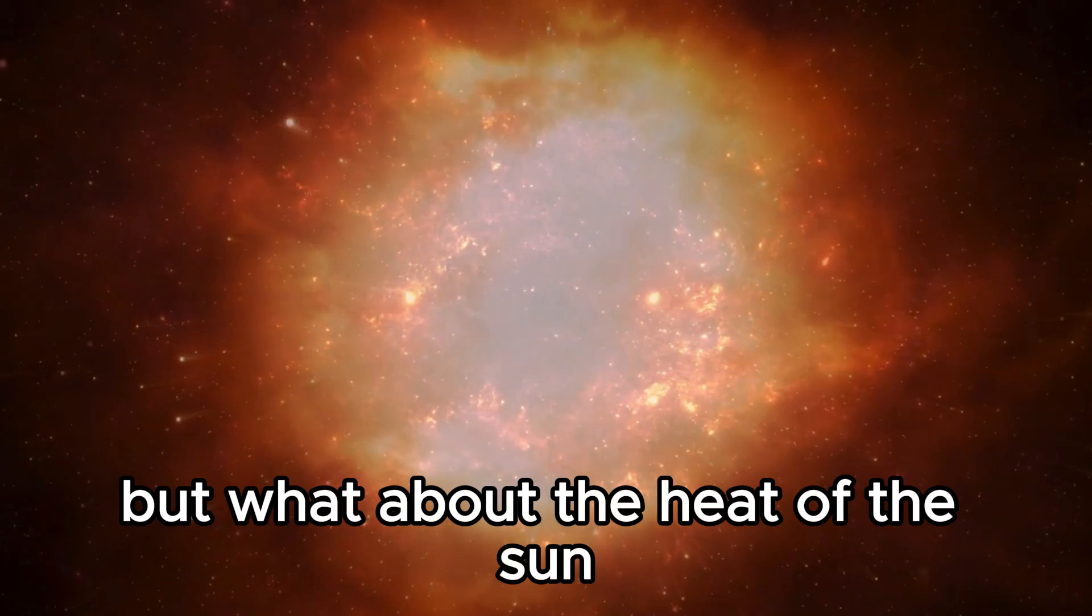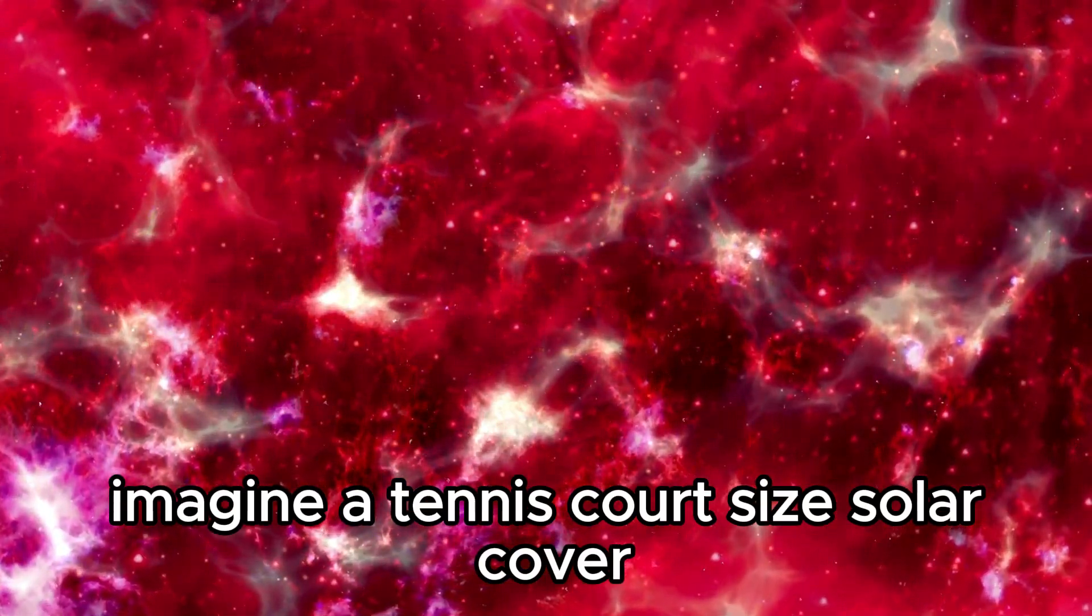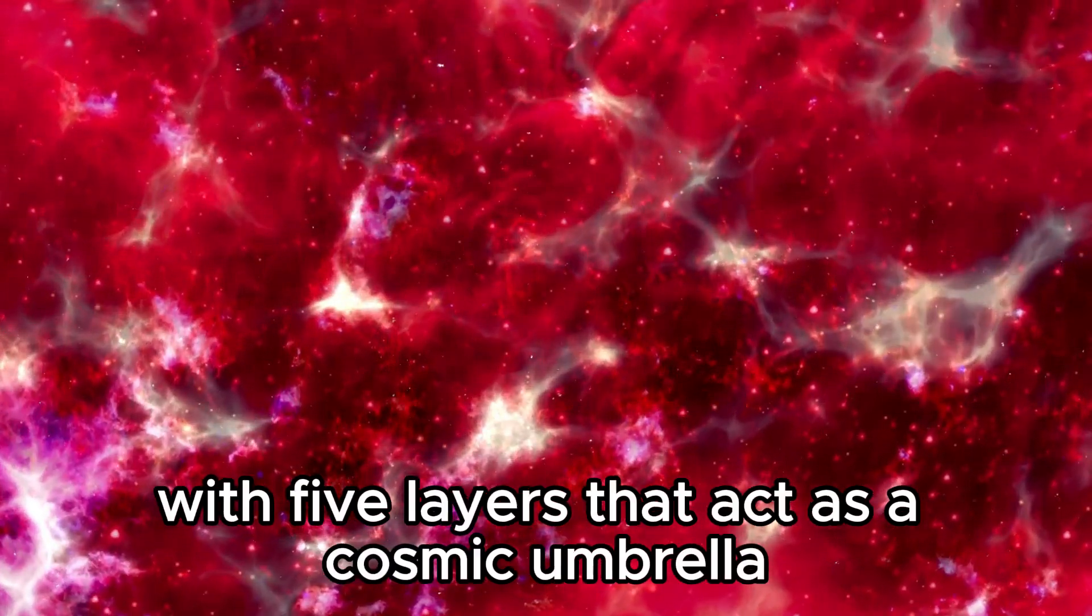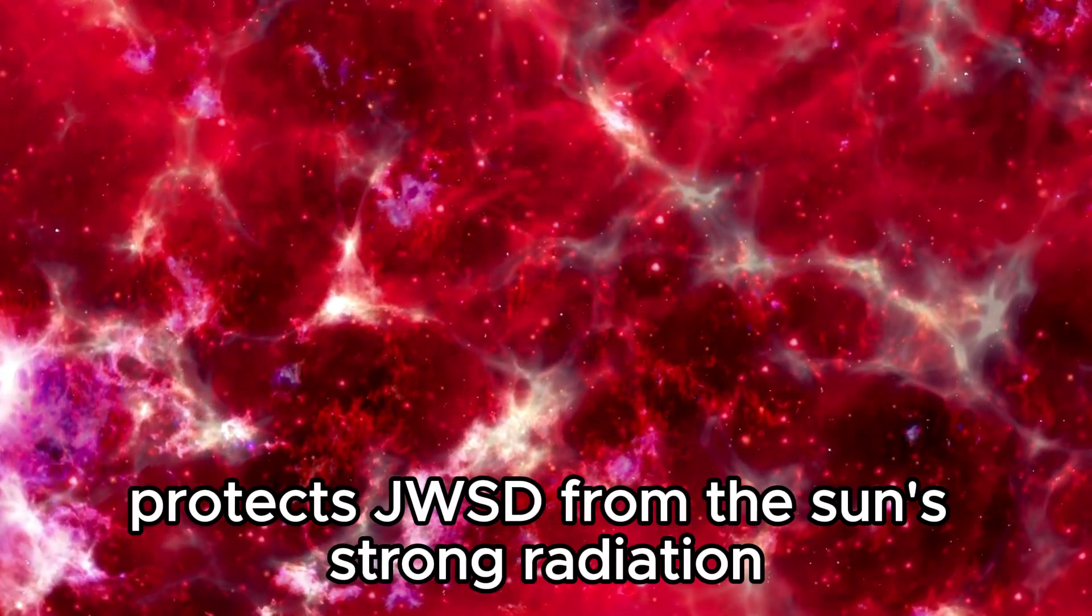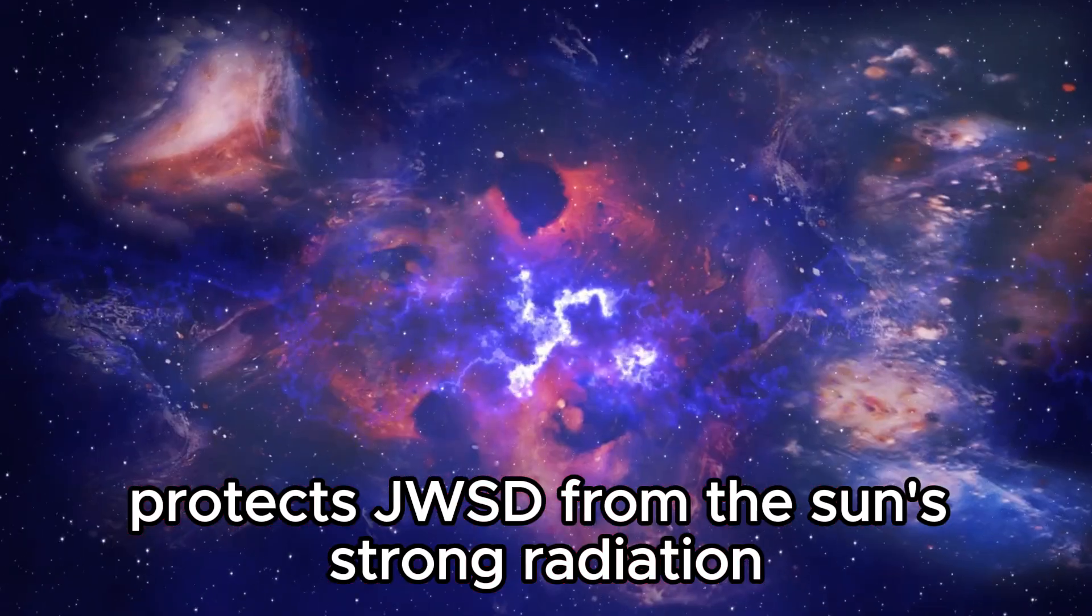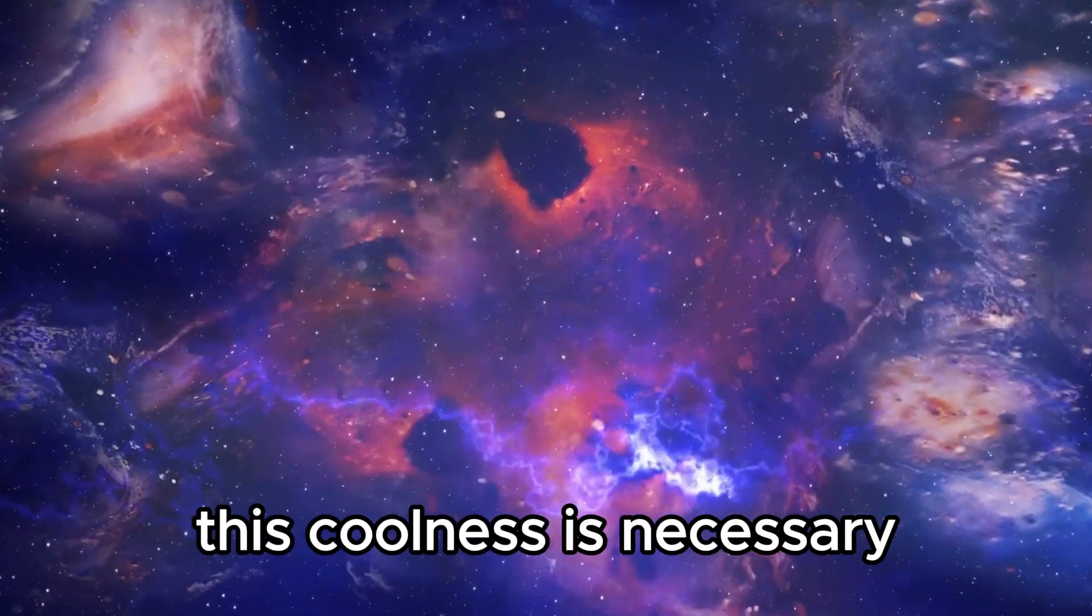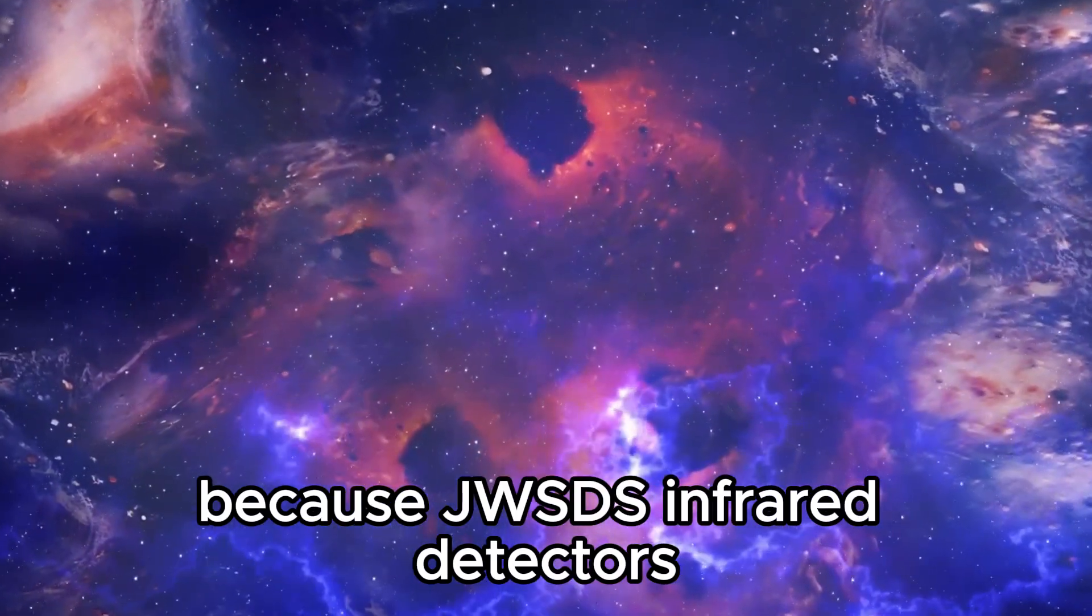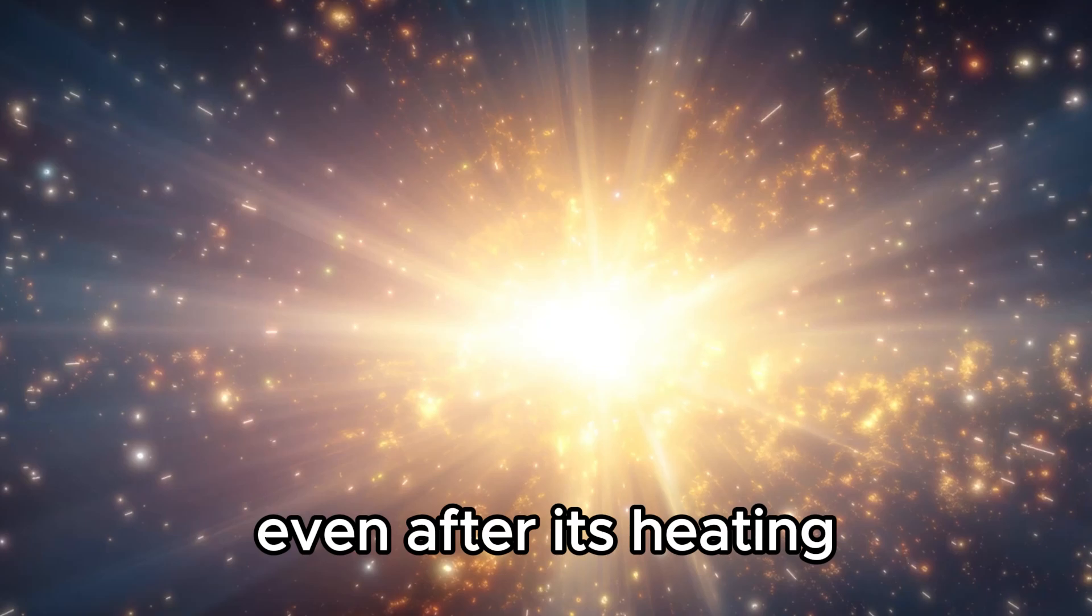But what about the heat of the sun? The smart sun shield is used there. Imagine a tennis court-sized solar cover with five layers that act as a cosmic umbrella. This barrier protects JWST from the sun's strong radiation, allowing it to cool to very low temperatures. This coolness is necessary because JWST's infrared detectors are sensitive.